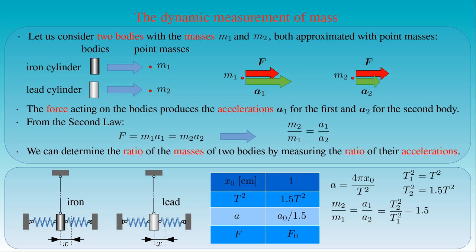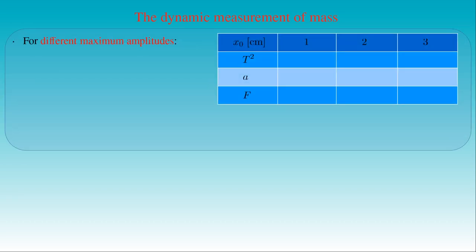This experiment provides a relatively precise method to measure mass ratios. By measuring the ratio of the periods of oscillations of bodies with different masses, we could determine the ratio of their masses. We can repeat this measurement with other maximum amplitudes of oscillation — for example 2 or 3 centimeters. Then the elastic force acting on the bodies at the maximum amplitude is 2 or 3 times F0. We find that the periods of the oscillations remain the same — that is, T2² is 1.5 times greater than T1² for the oscillating lead cylinder compared to the iron cylinder.